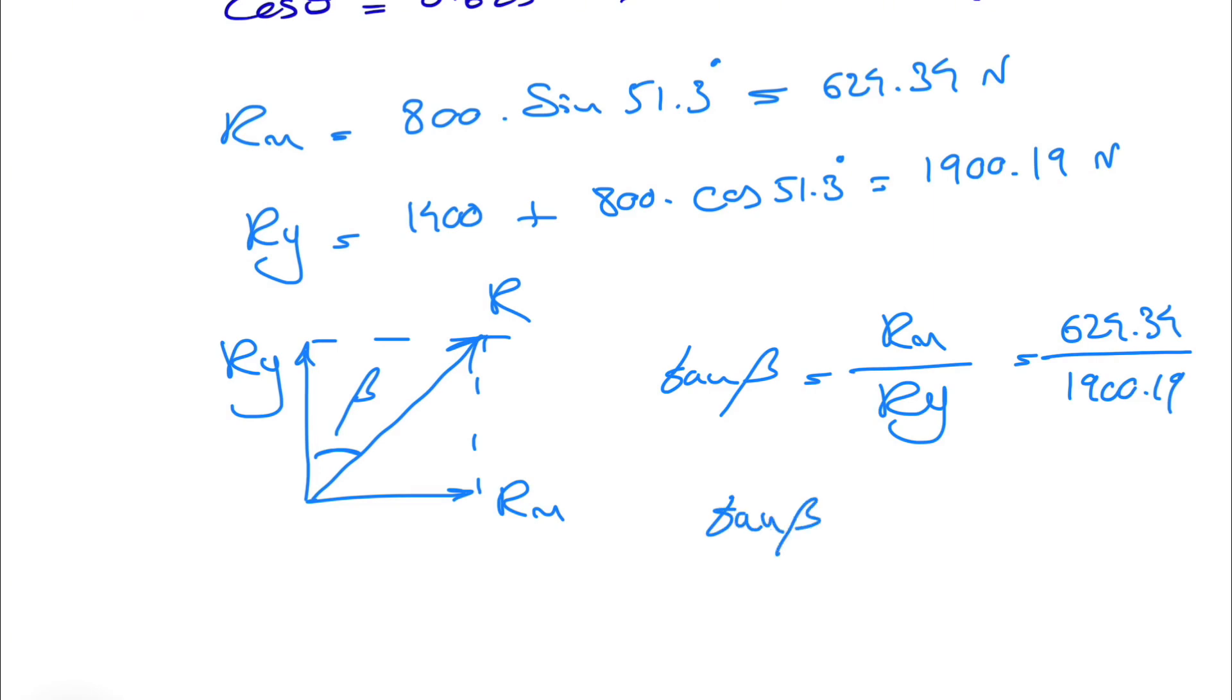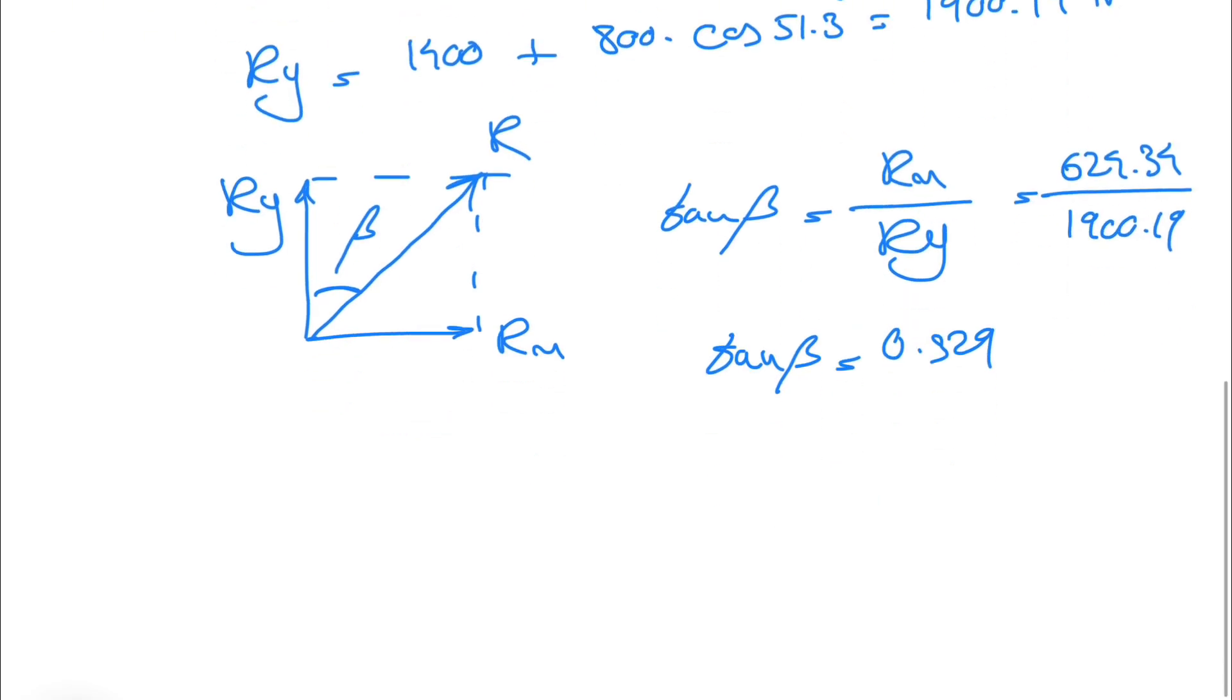Tangent of beta would be Rx divided by Ry, which is 624.34 divided by 1900.19. So tangent of beta is 0.329, and beta would be the tangent inverse of 0.329, which is 18.19 degrees.